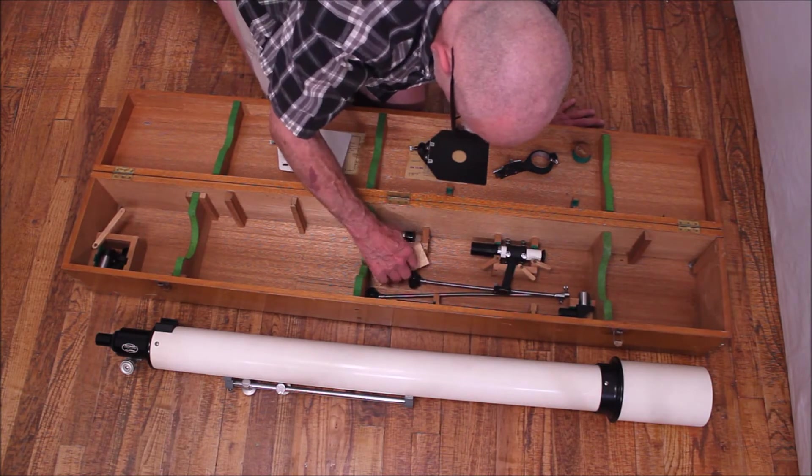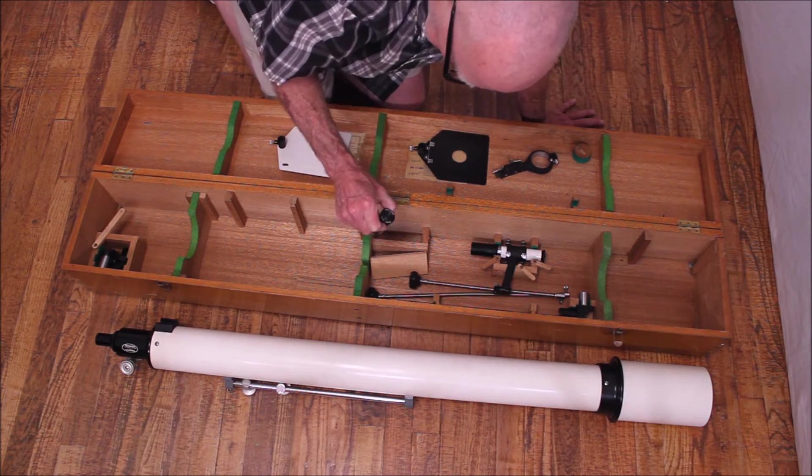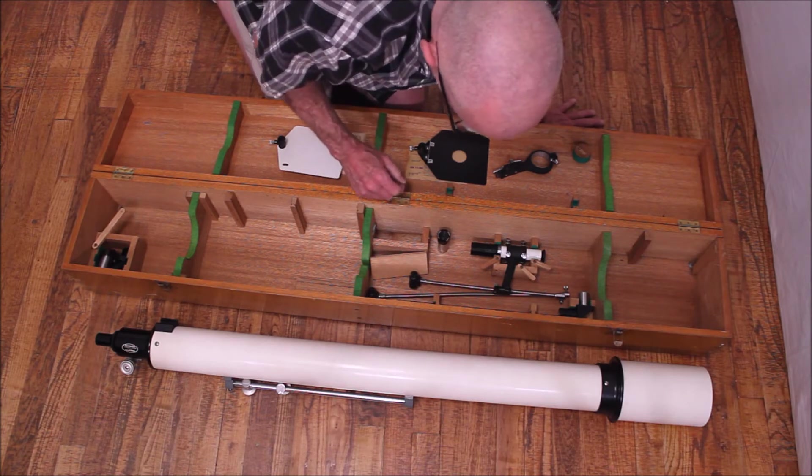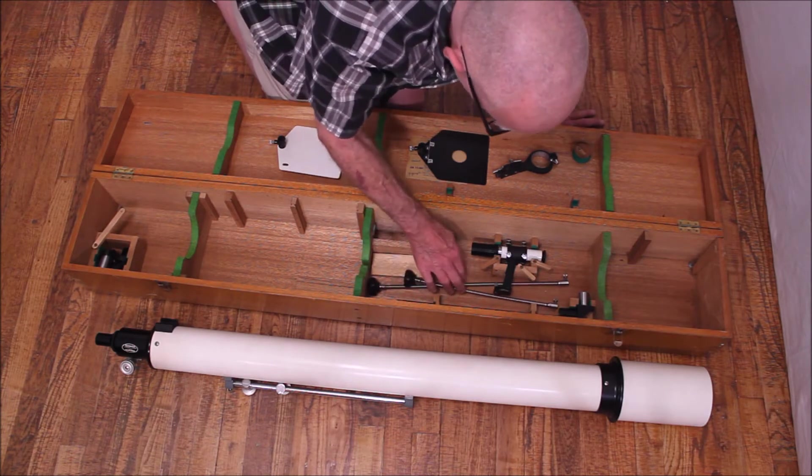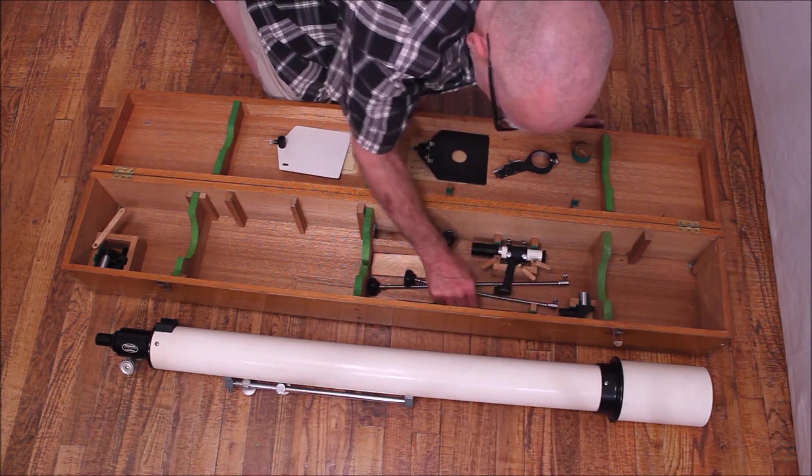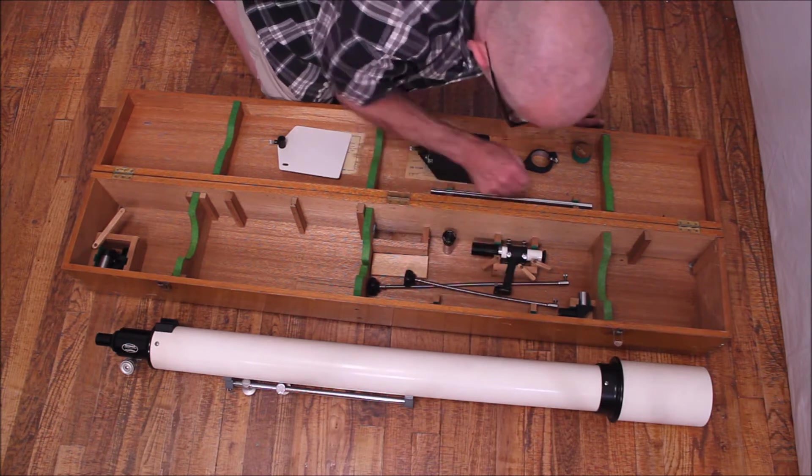Inside here we have an eyepiece. This is the 12.5 to 25 convertible eyepiece system. These are not original. These would not have gone there. This is also out of place. It would have come up here and there would have been a remote control in there.